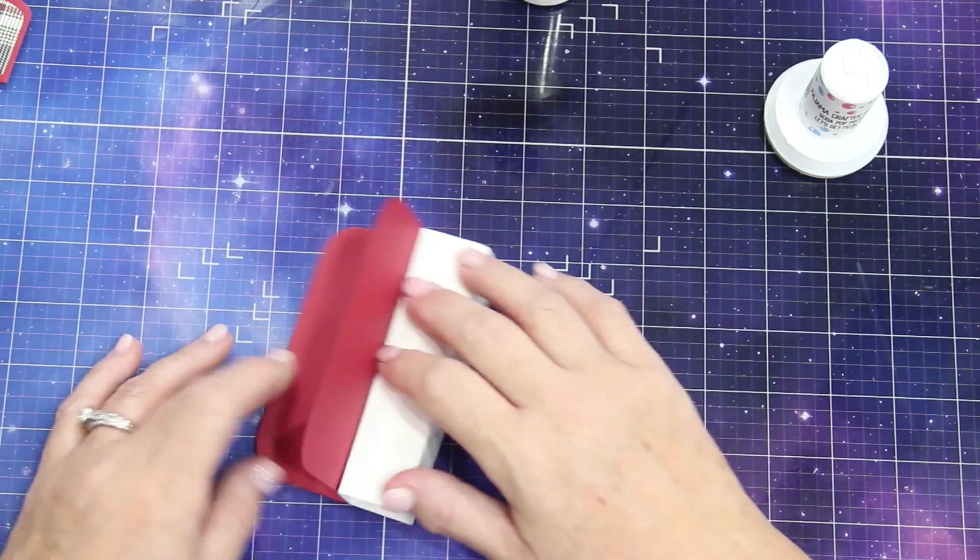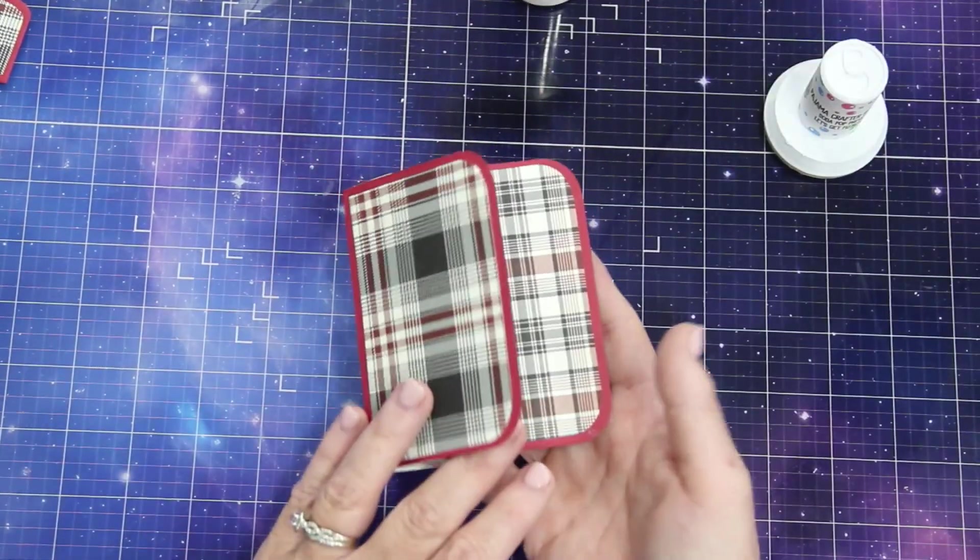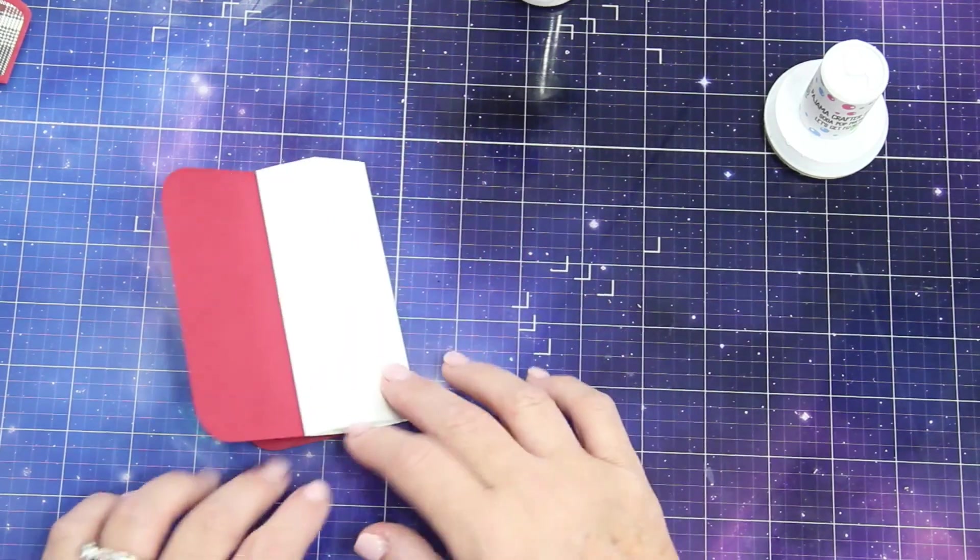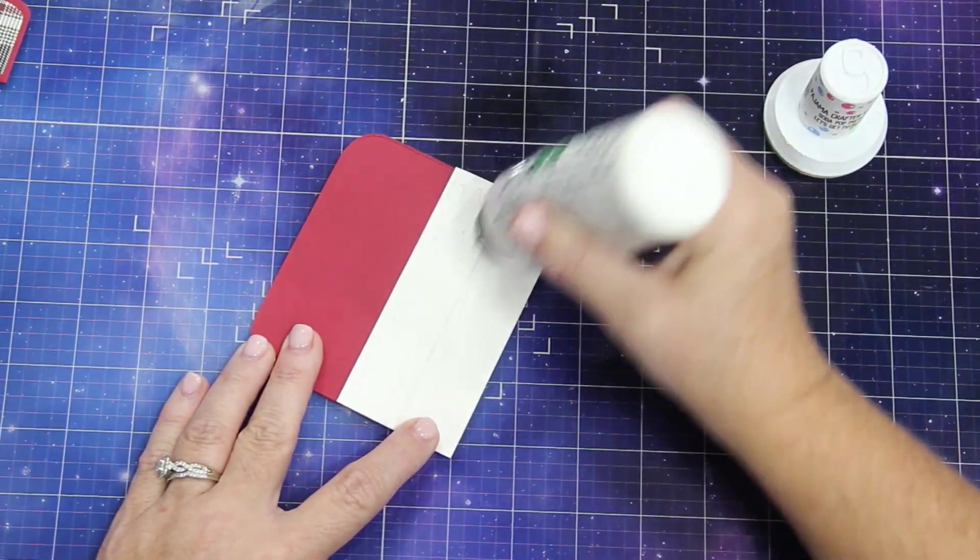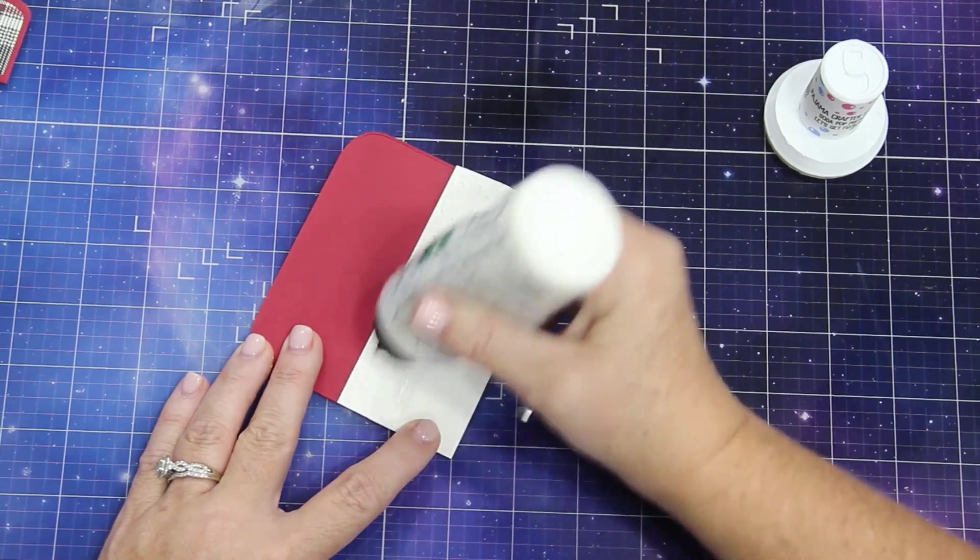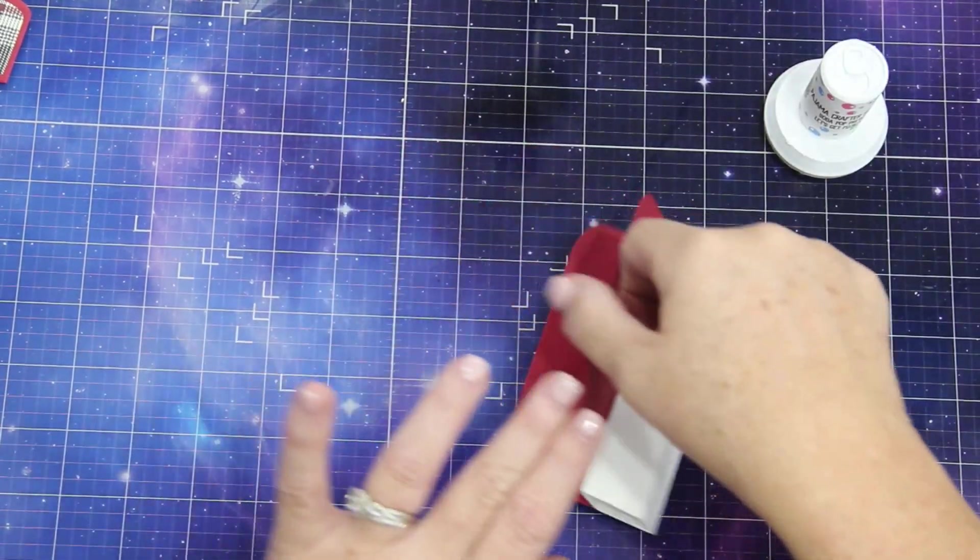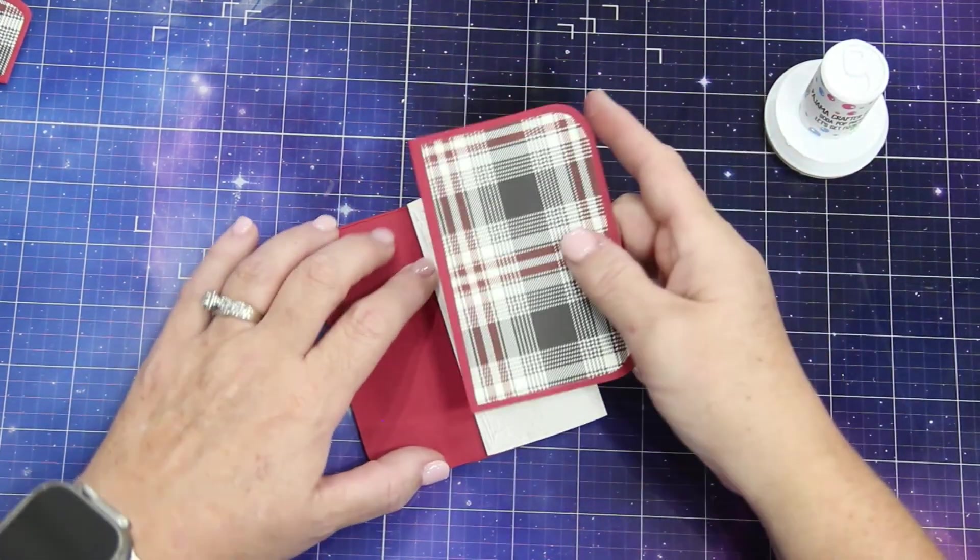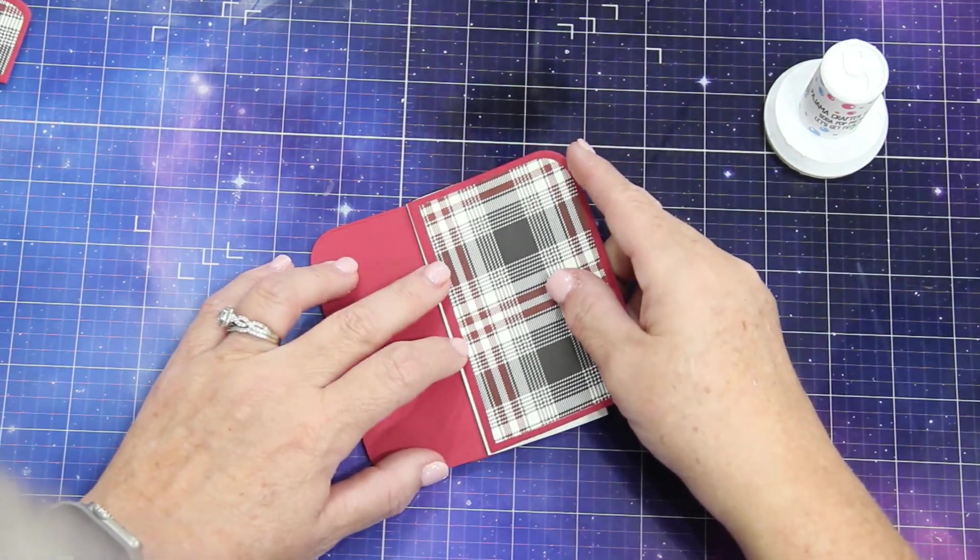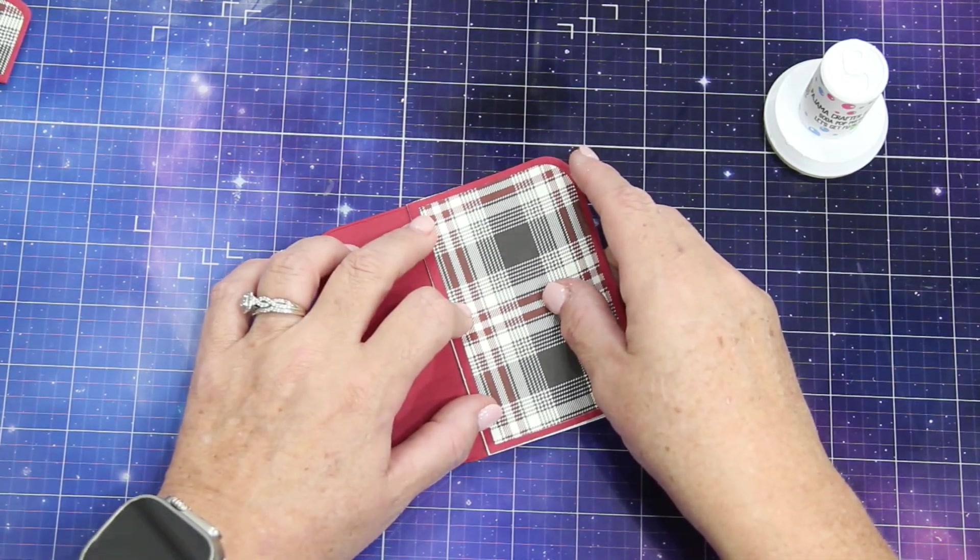I then flip it over, and I'm going to repeat this process. So on the left-hand side of the white box, I am adding my glue, I'm checking my pattern to make sure that I've got my alternating plaids, and then again, I am putting down the plaid piece, and I'm butting up that edge right to the seam, but not hanging over.